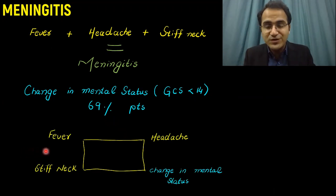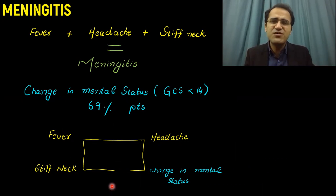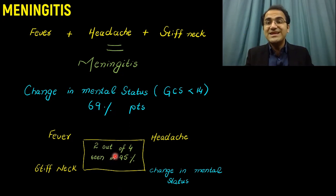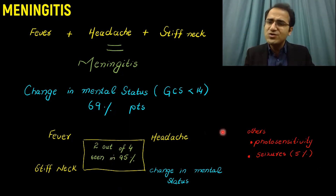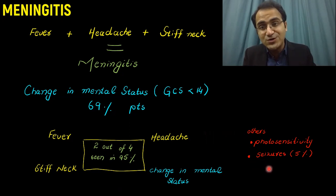So there are four things: fever, headache, stiff neck, and change in mental status. In patients of meningitis, 95% will be having at least two of these four findings. Other than these, patients will also have photosensitivity — sensitivity to light — and 5% of these patients will also present with seizures.